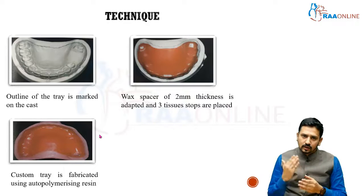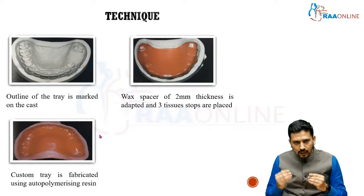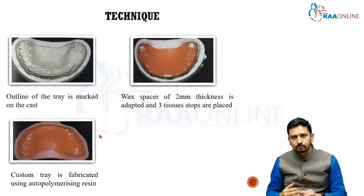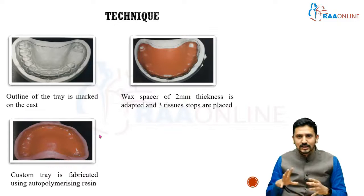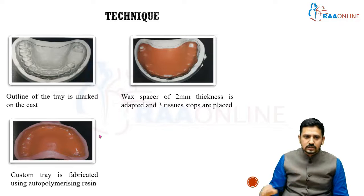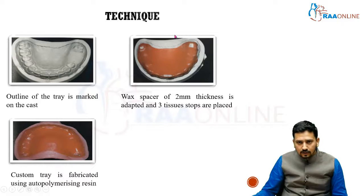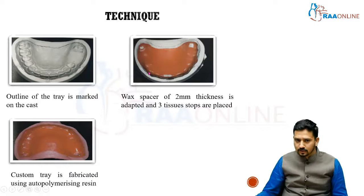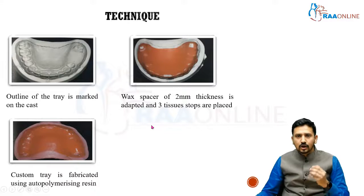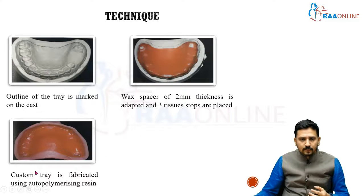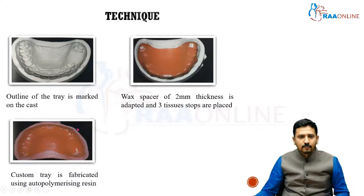This picture represents an anatomic impression in a class 3 situation, for which an anatomic impression is more than sufficient for fabricating a removable partial denture. To fabricate an anatomic impression: first, a preliminary impression is made with irreversible hydrocolloid or alginate and a cast is fabricated. The outline of the cast is then marked, after which a wax spacer of 2 millimeter thickness is placed along the teeth and in the edentulous region. Make sure that there are 3 tissue stops placed — 1 in the anterior and 2 in the posterior region.